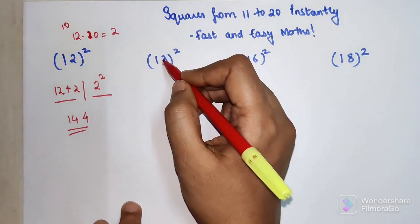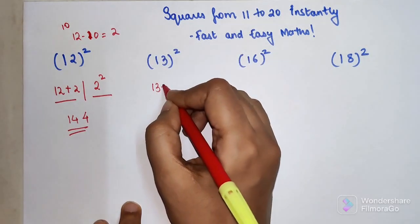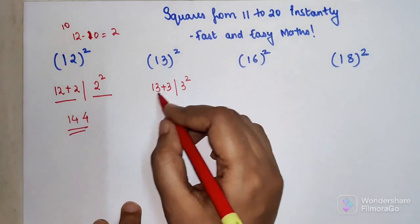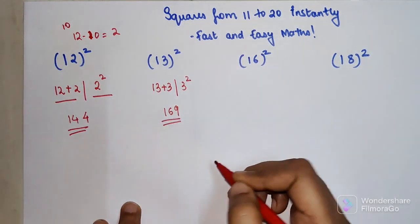So now very quickly let's do this one. Again, what is the difference when you take 10 away from 13? You're left with 3. So you're going to add 3 and then do 3 squared. So you have 13 plus 3 which is 16, and 3 squared which is 9.